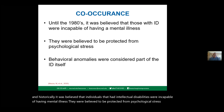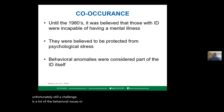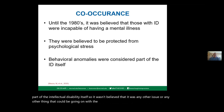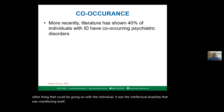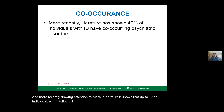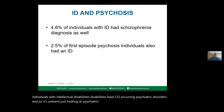Unfortunately, this is still a challenge: a lot of behavioral issues or behavioral anomalies were considered to be part of the intellectual disability itself rather than any other issue going on with the individual. More recently, literature has shown that up to 40% of individuals with intellectual disabilities have co-occurring psychiatric disorders — certainly something to pay attention to.